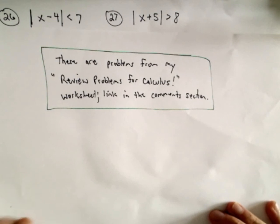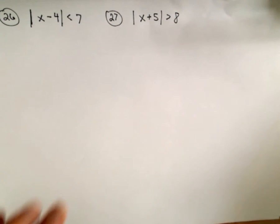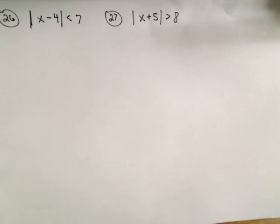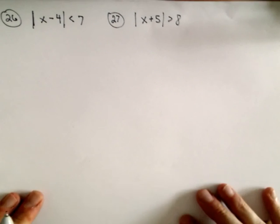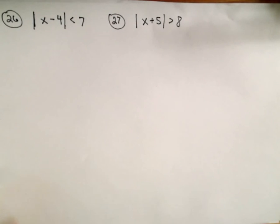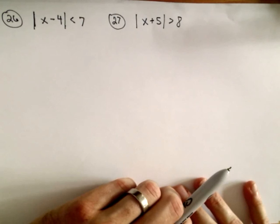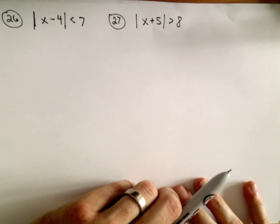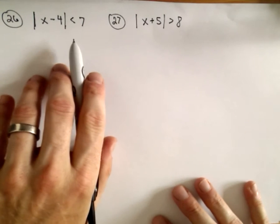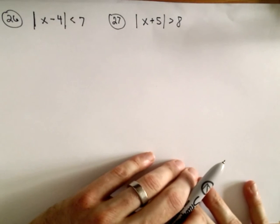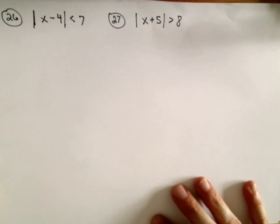Okay, so here are a couple more inequalities from my review problems for calculus worksheet. Here we just have some absolute value inequalities, and these are pretty easy problems. You won't see a ton of absolute value inequalities, at least that I recall, when teaching calculus or taking calculus. You do see them when you talk about the delta epsilon limit definition. So you will see them in that case.